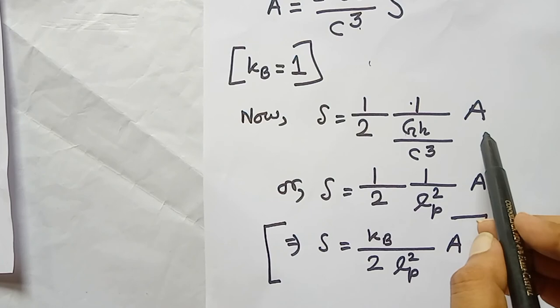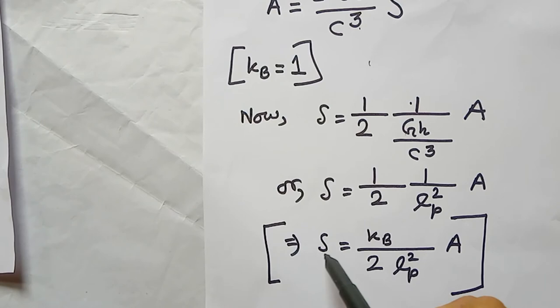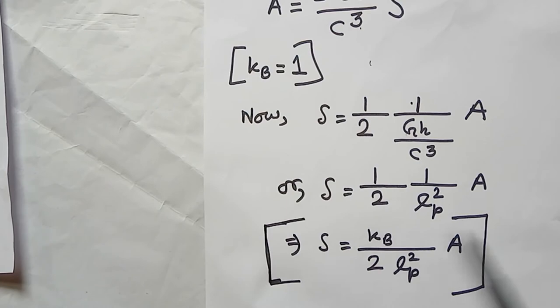This is the Hawking-Bekenstein relation for black holes: the relation between entropy and area.